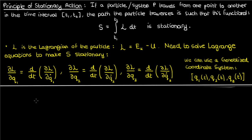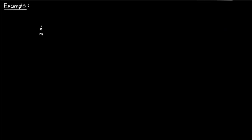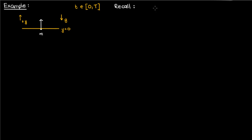Now let's do an example where we not only apply the principle of stationary action but also give some intuition behind it. Say we have a ball of mass m, and we throw that ball up in the air with some initial velocity from a vertical level of y equals zero. Gravity is acting downwards and the direction of positive y is up. Let's also suppose that it takes capital T seconds for the ball to come back down. From classical mechanics, if we plot the trajectory y as a function of time, the path would follow a parabola in time.